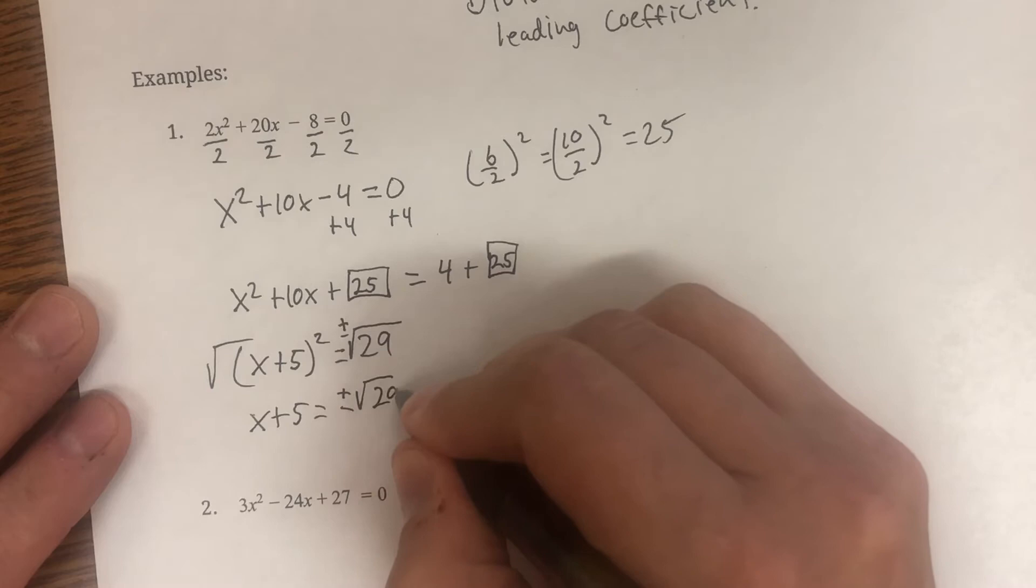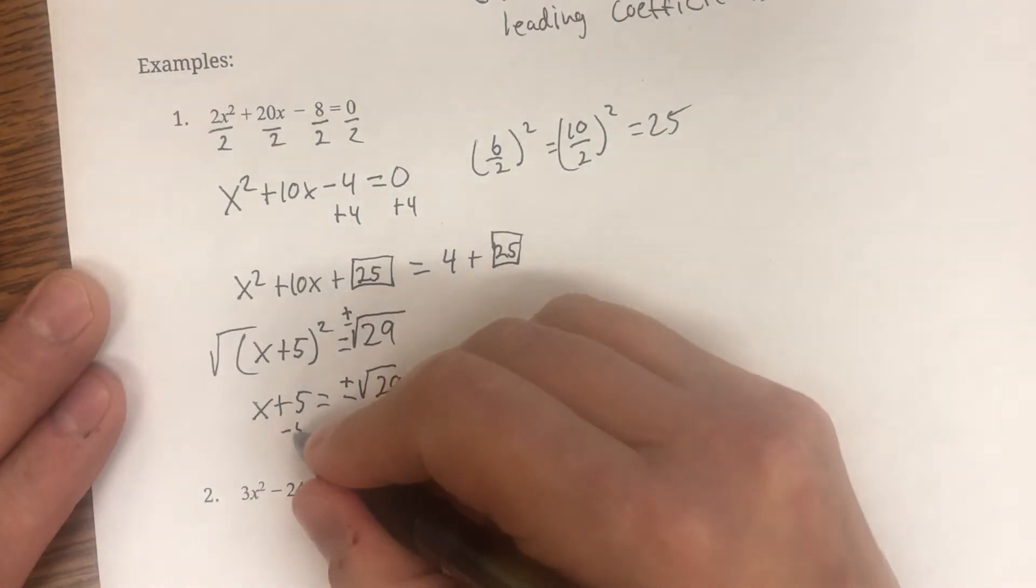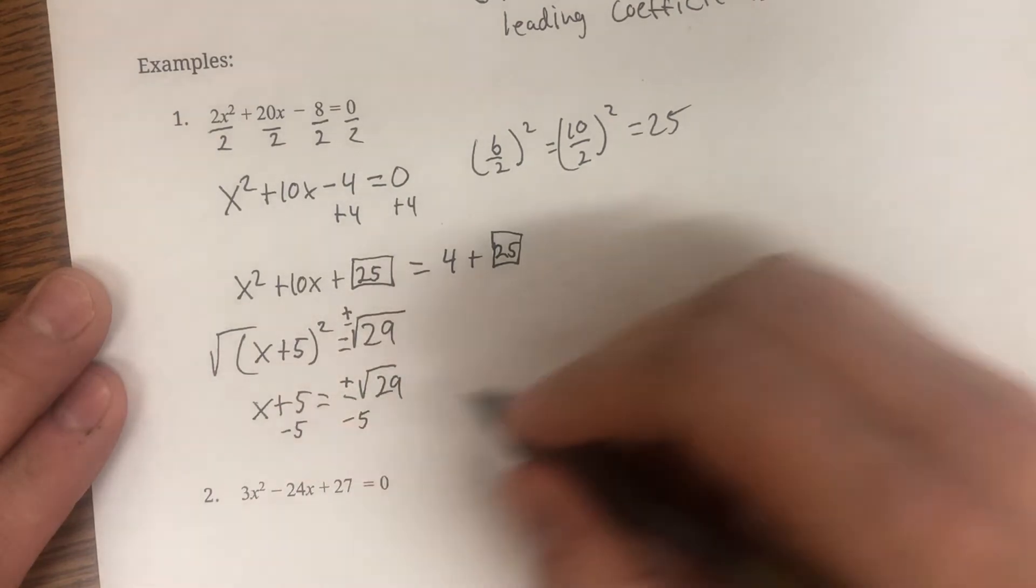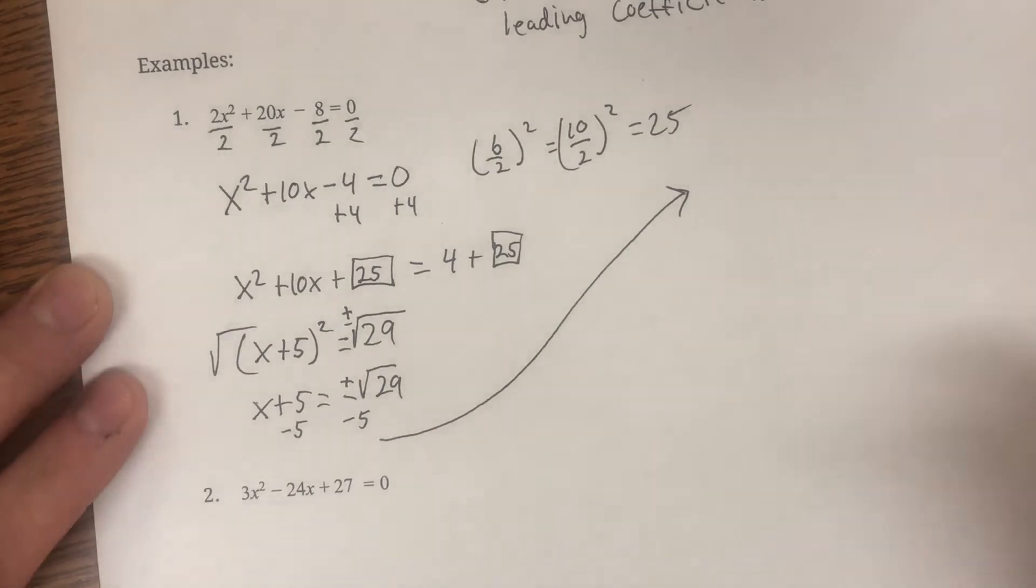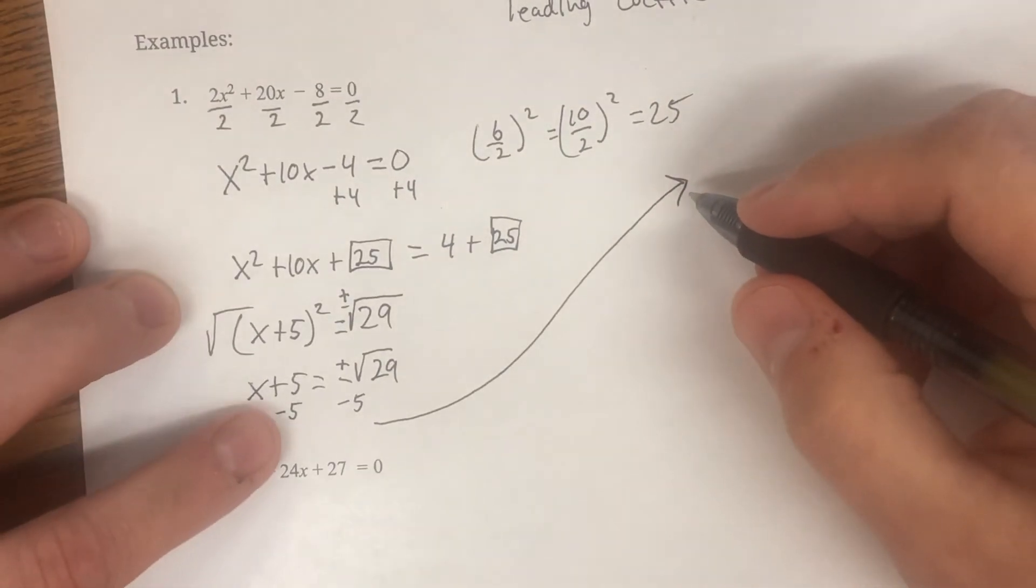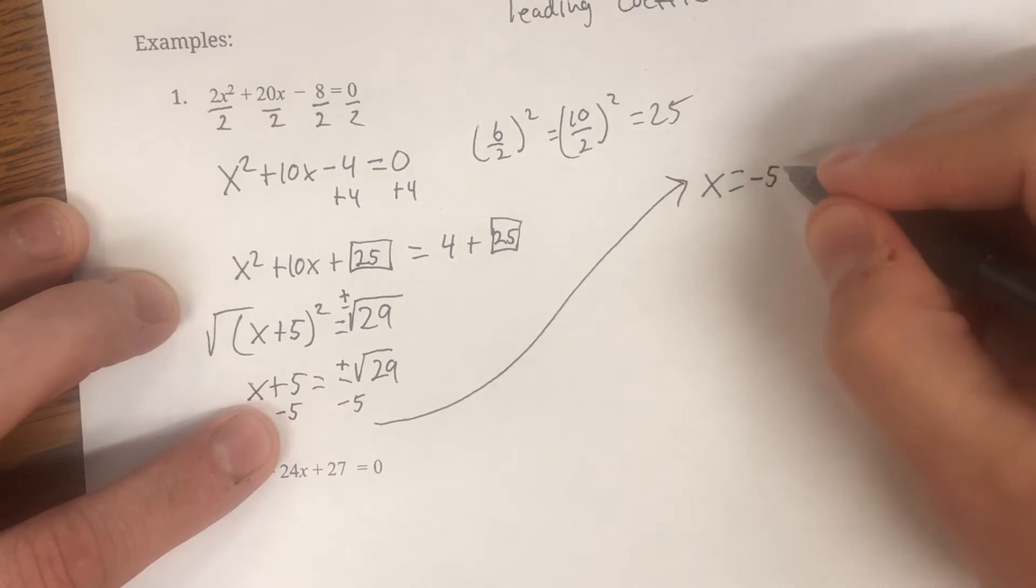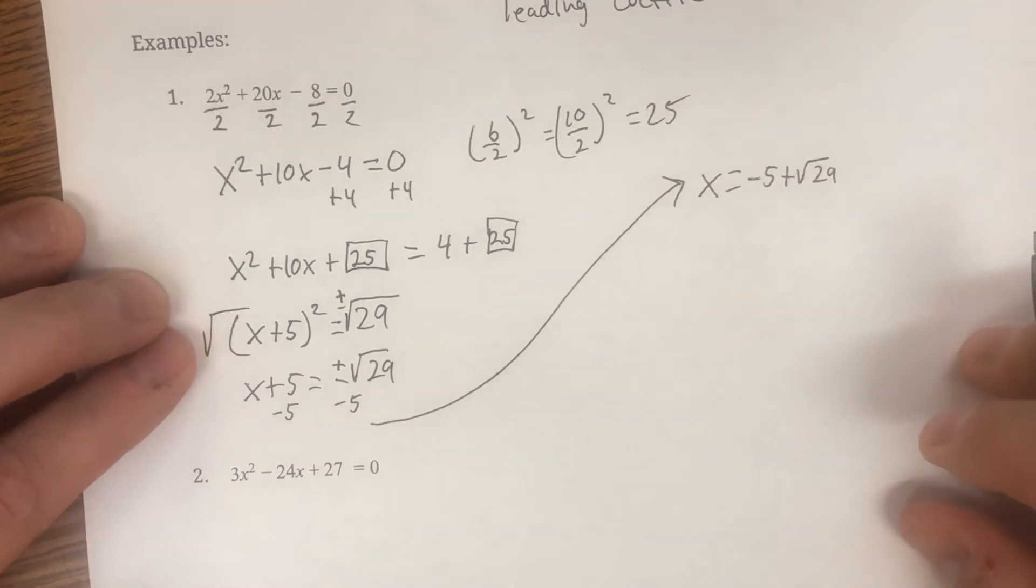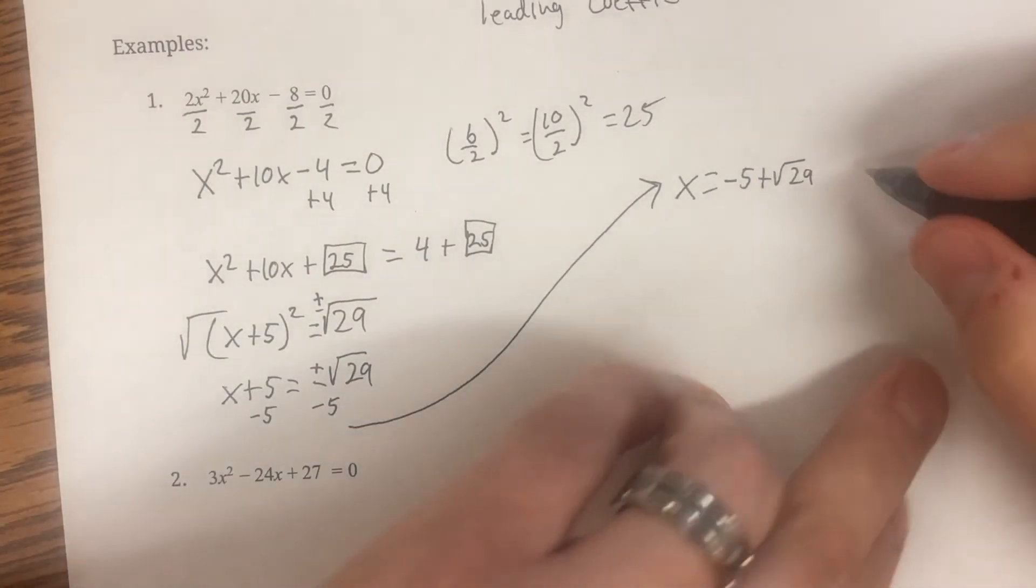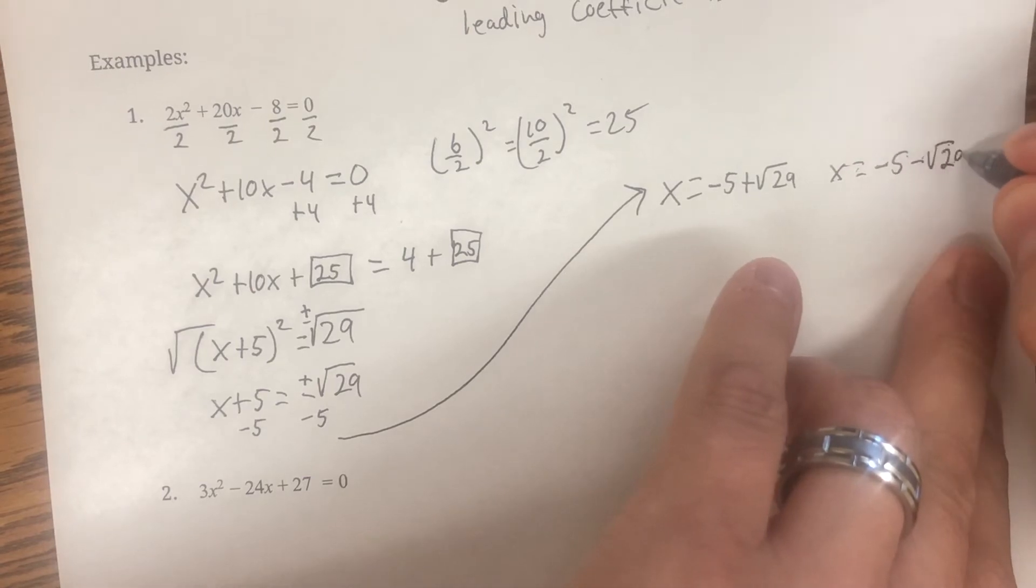And we are left with those cancel, squared square root gone. x plus five equals plus or minus the square root of 29. Now, don't forget, you have to find both solutions. So when I subtract five from both sides, I will rewrite it. I'm going to slide all the way over to here. Our first one, our negative five is over on the right.